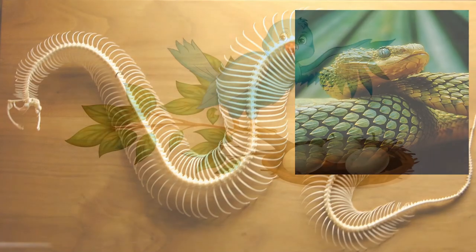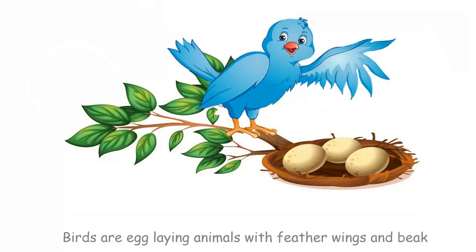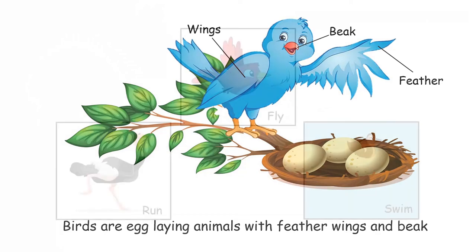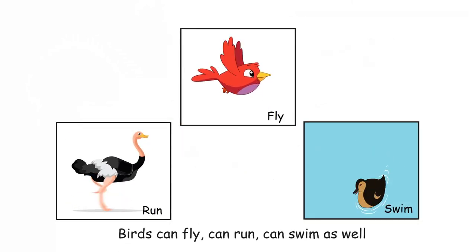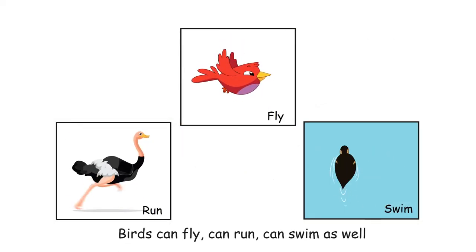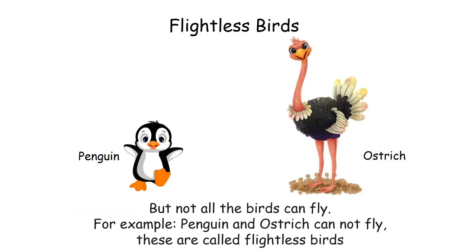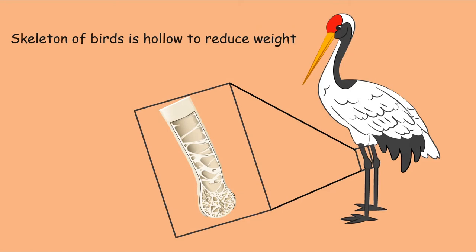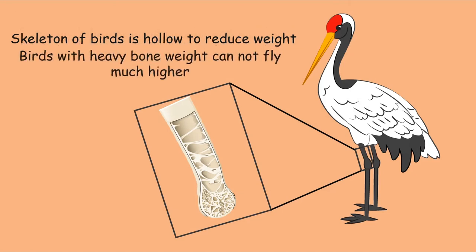Birds are egg-laying animals with feathers, wings and a beak. Birds can fly, run and swim as well. But not all birds can fly — for example, penguins and ostriches cannot fly. These are called flightless birds. The skeleton of birds is hollow to reduce weight. Birds with heavy bone weight cannot fly much higher.